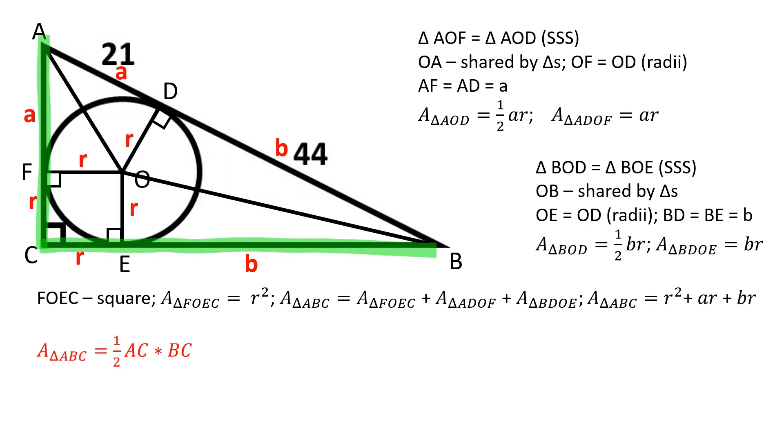Also, the area of the triangle ABC is equal to half the product of AC and BC where AC is equal to A plus R and BC is equal to B plus R.